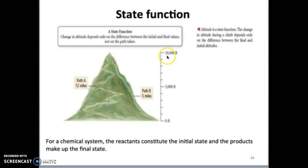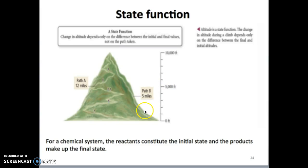If you think about the altitude of the person traveling from the bottom to the top of the mountain, you notice that whether the person takes the straightforward path or the scenic route, the altitude change would be exactly 10,000 feet, regardless of which path they take. However, if you measure the distance traveled, the person who takes the straightforward route travels a much shorter distance compared to the person who takes the scenic route.